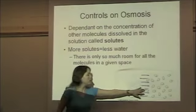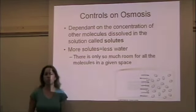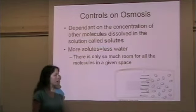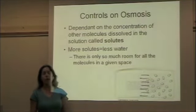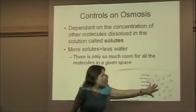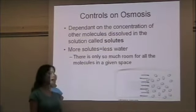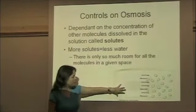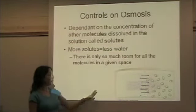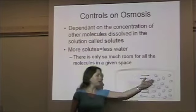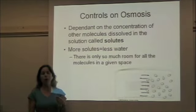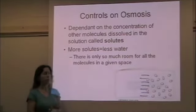So here we have a picture, and the little green circles are supposed to represent solutes. The right area has more solutes, and therefore it holds less water. The left part of the picture, without any solutes dissolved, has more water. So water in this case would move from left to right, because it wants to reach an equilibrium — a point where there's an equal amount of water in both areas.